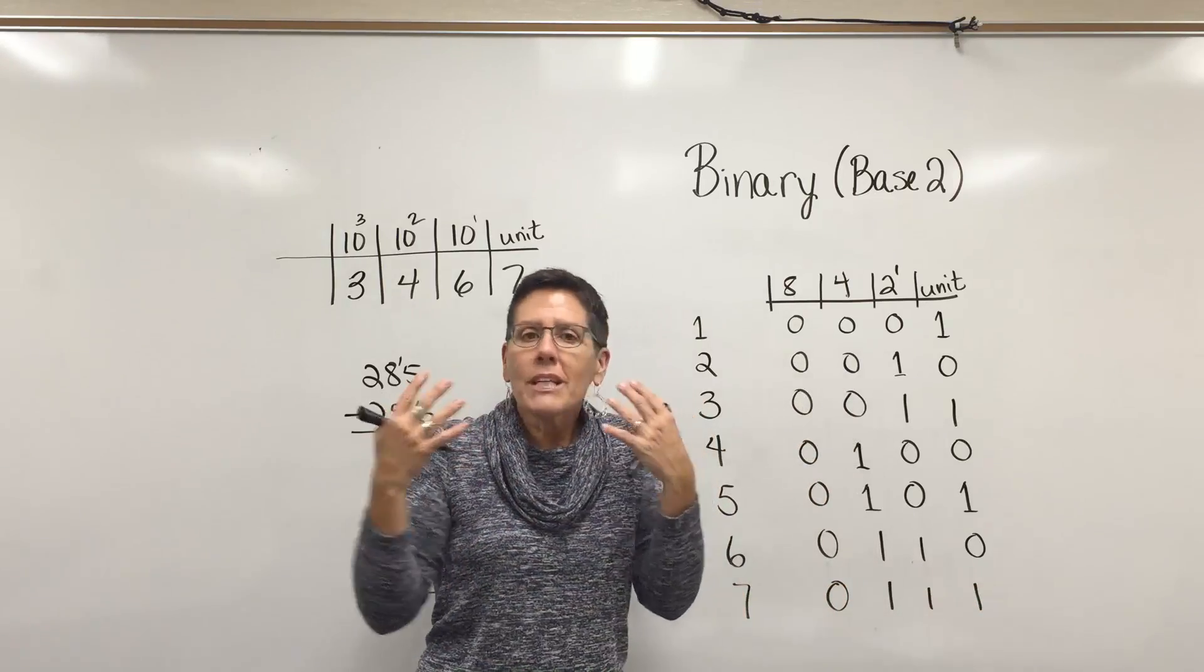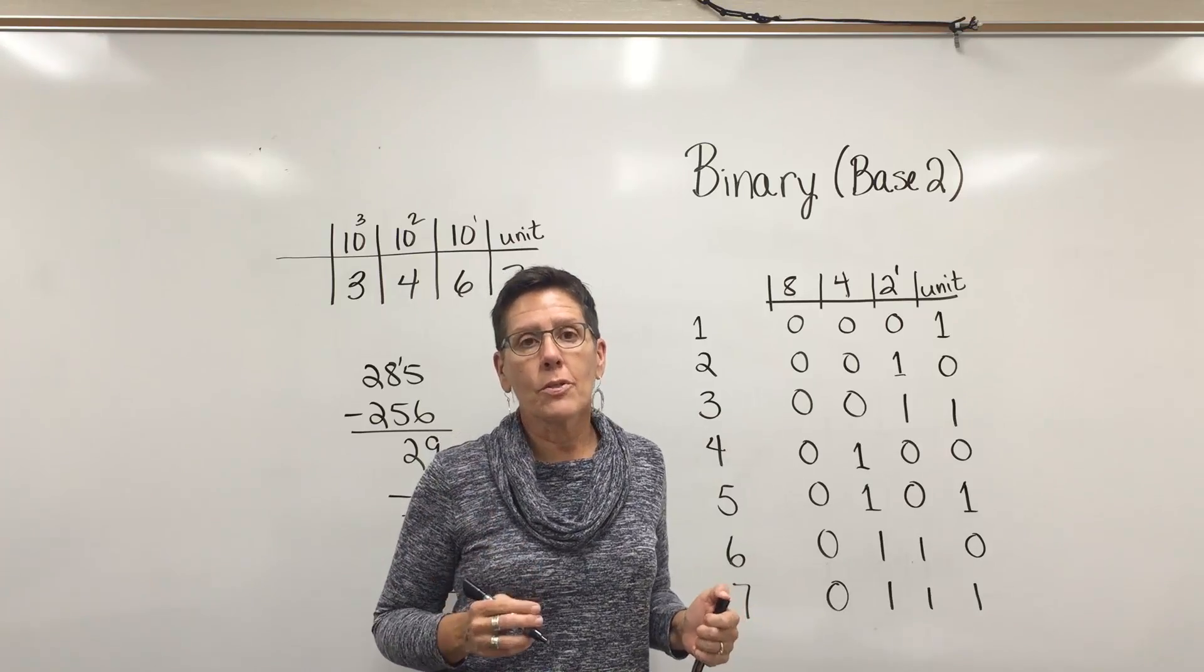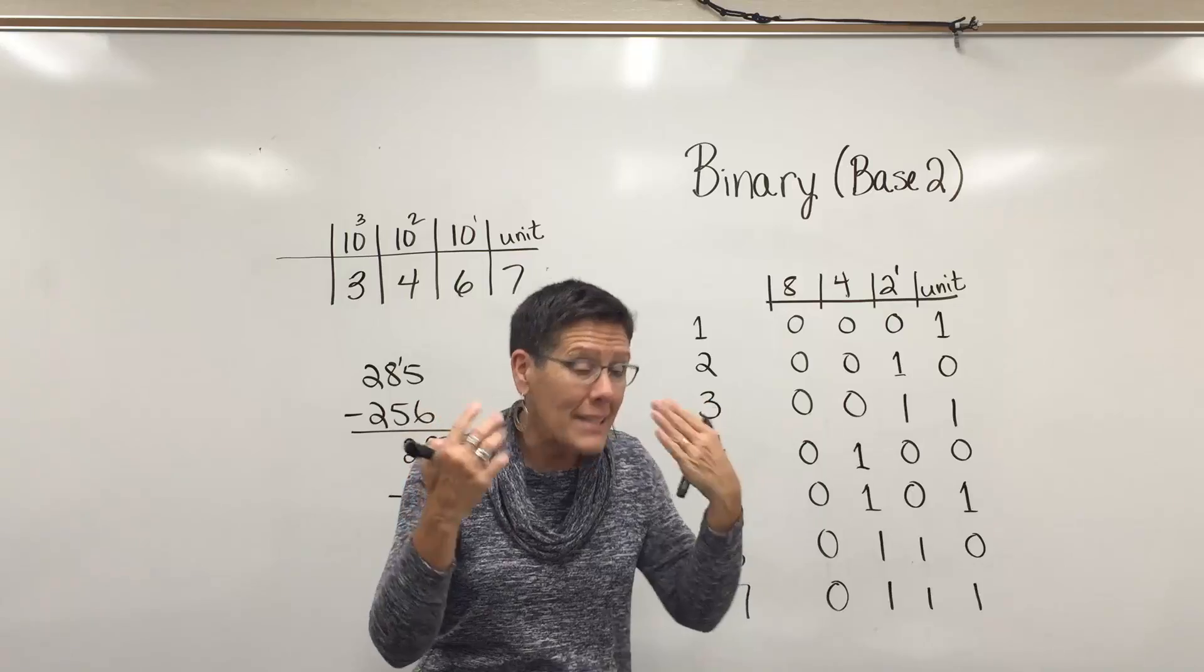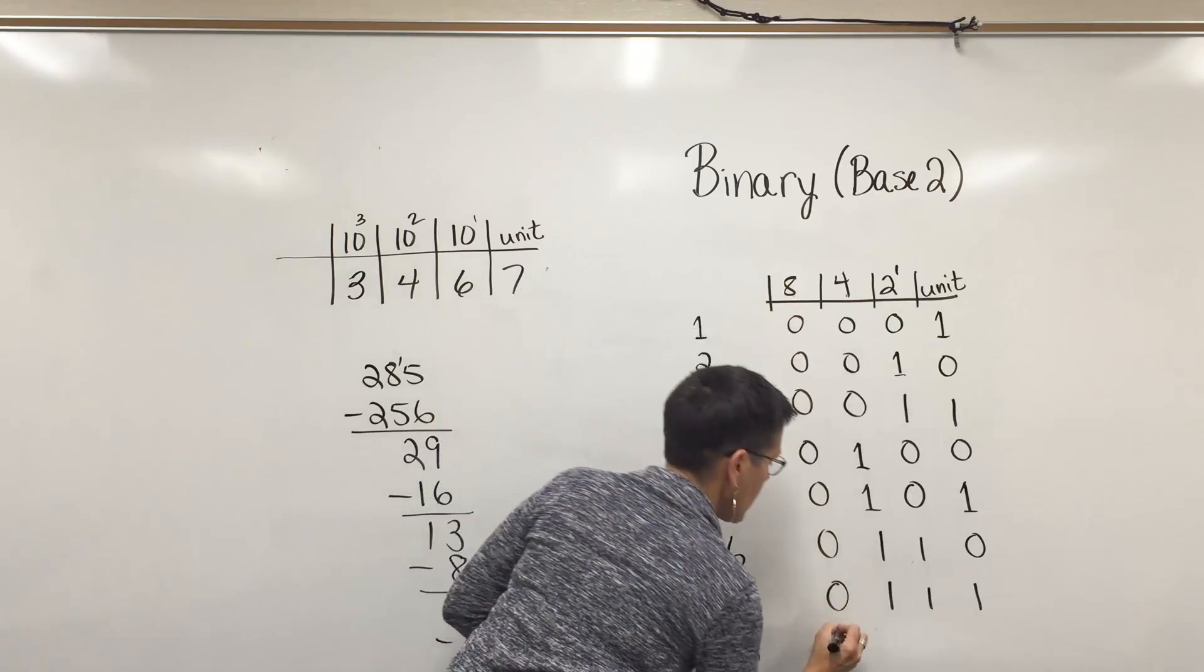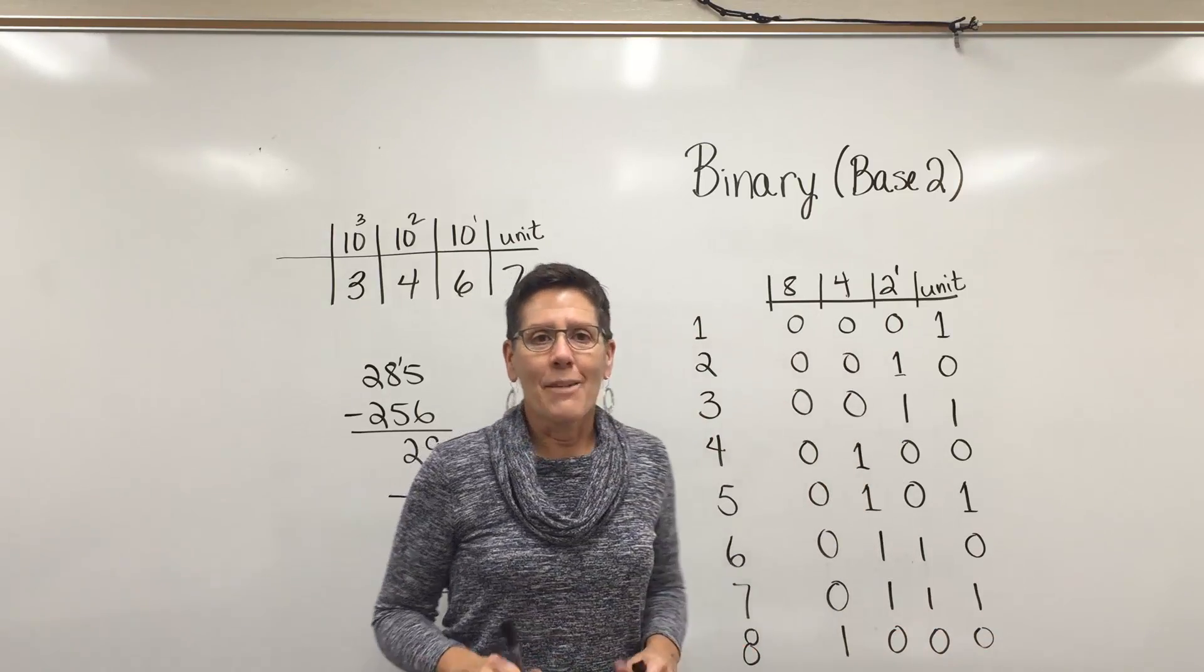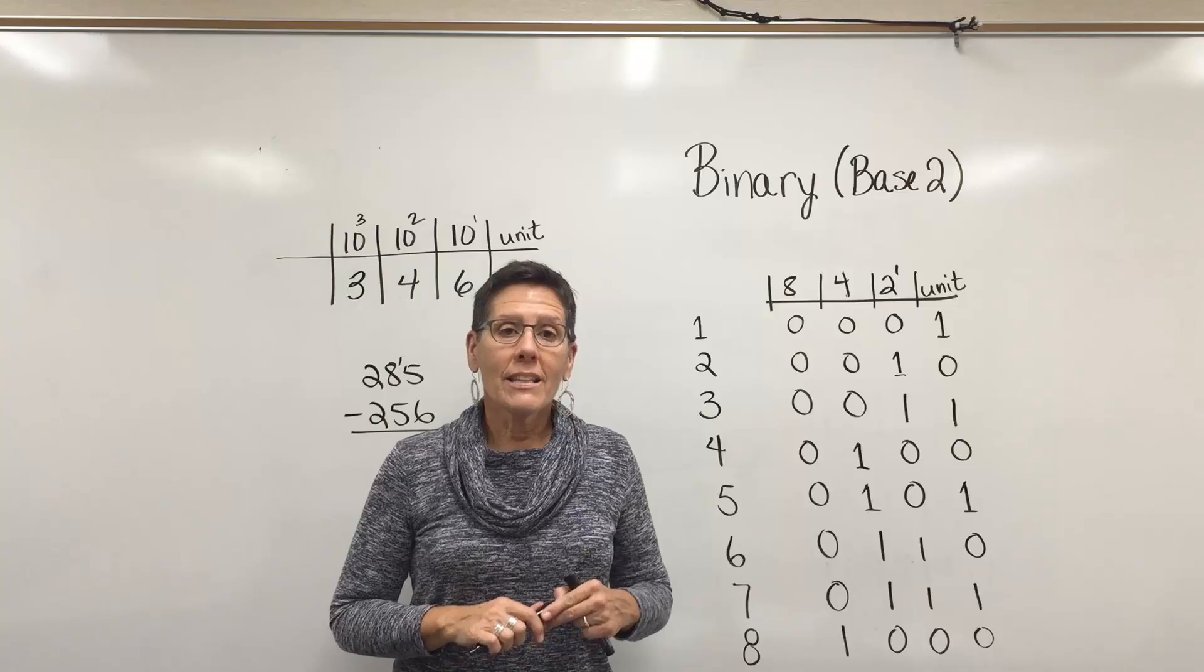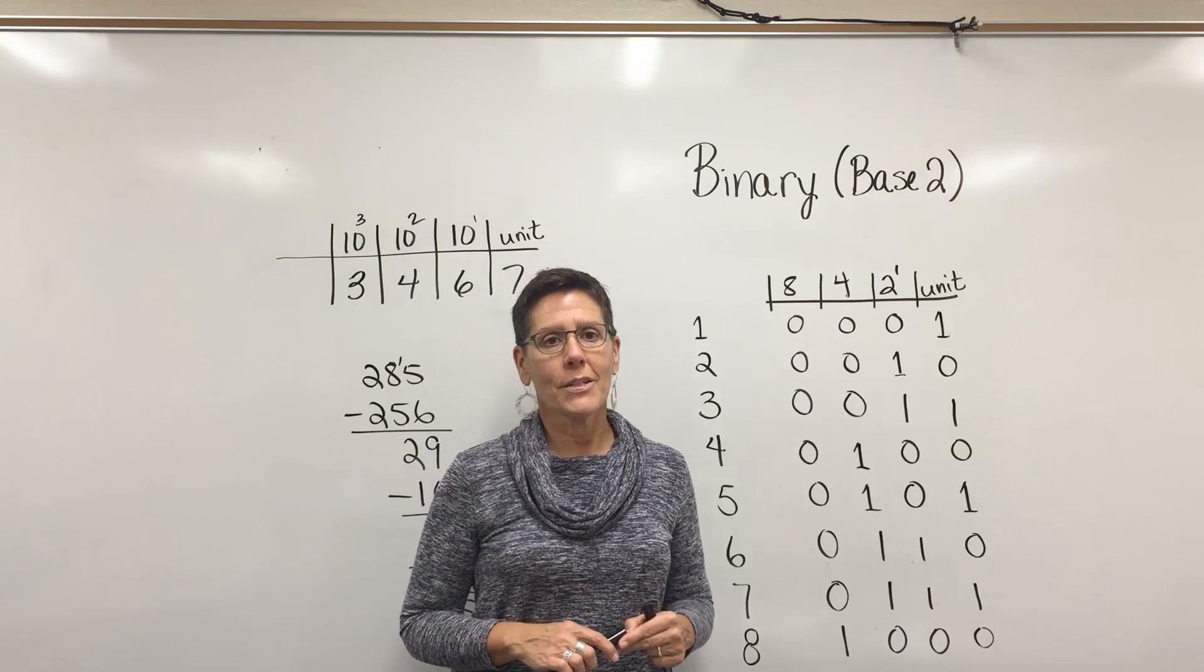The number 6 is a 4 plus 2, so a 1 here and a 1 here, 0's here and here. The number 7 is a 4, a 2, and a 1. They can easily create these, and actually you would memorize these if you are a computer science student so that you don't have to process it each time. The number 8 is just a 1 in the 8's position. I'm going to stop for now. I'd like you to do some more work now in converting from base 10 to binary notation.